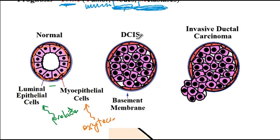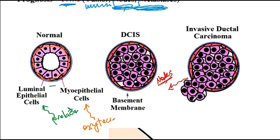Ductal carcinoma in situ is a condition where atypical luminal epithelial cells have increased in number but have not yet invaded the myoepithelium or basement membrane. Invasive ductal carcinoma is when cancer cells have attacked the myoepithelial cells and basement membrane, and from there will spread to the axillary lymph nodes — which is the most important prognostic factor.